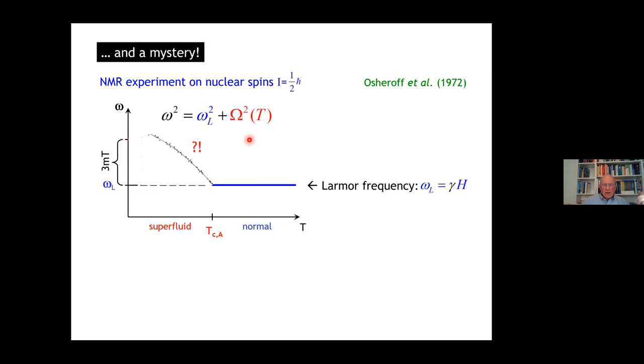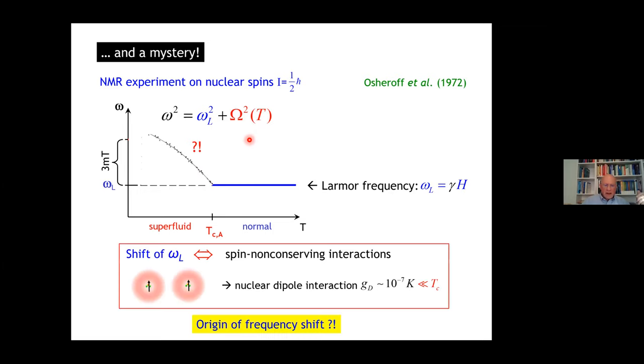Any shift in the Larmor frequency must be due to spin-non-conserving interactions. But there is virtually no spin-non-conserving interaction in this isotropic fluid. If you dig around, there is the dipole-dipole interaction of the nuclei. But this is very weak, 10 to the minus 7 K, much smaller than T_C which is 10 to the minus 3, four orders of magnitude larger. So what is the origin of this frequency shift?